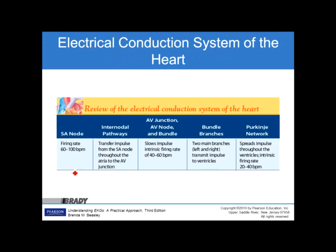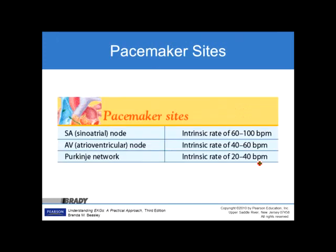Electrical conduction system of the heart: SA nodal firing rate 60 to 100 beats per minute, AV nodal firing rate 40 to 60 beats per minute, Purkinje network or ventricular muscle firing rate 20 to 40 beats per minute. Pacemaker sites: the sino-atrial node is the primary pacemaker, the AV node is the backup, and the Purkinje network is number three. As we get lower in the heart tissue, the rate slows down — the AV node runs slower than the SA node, and the Purkinje fibers run slower than the AV node.